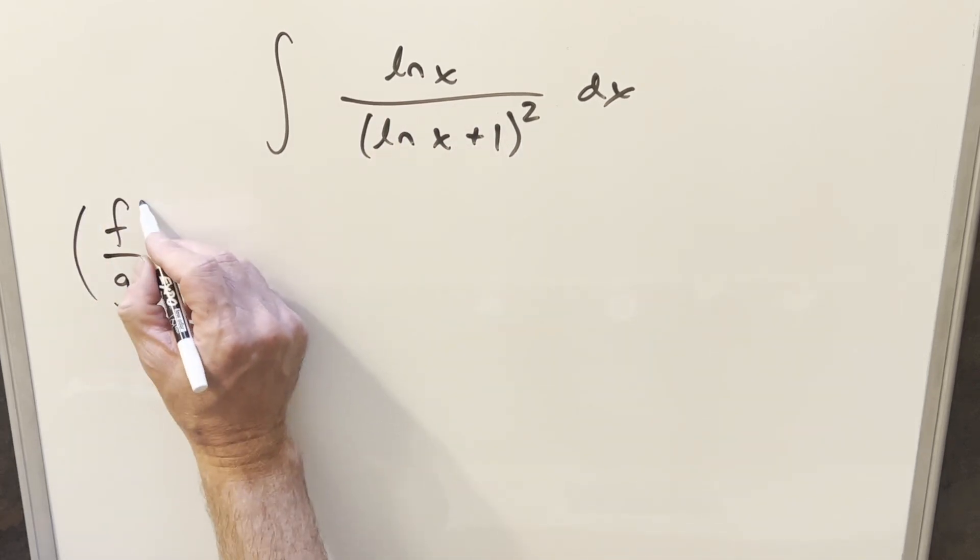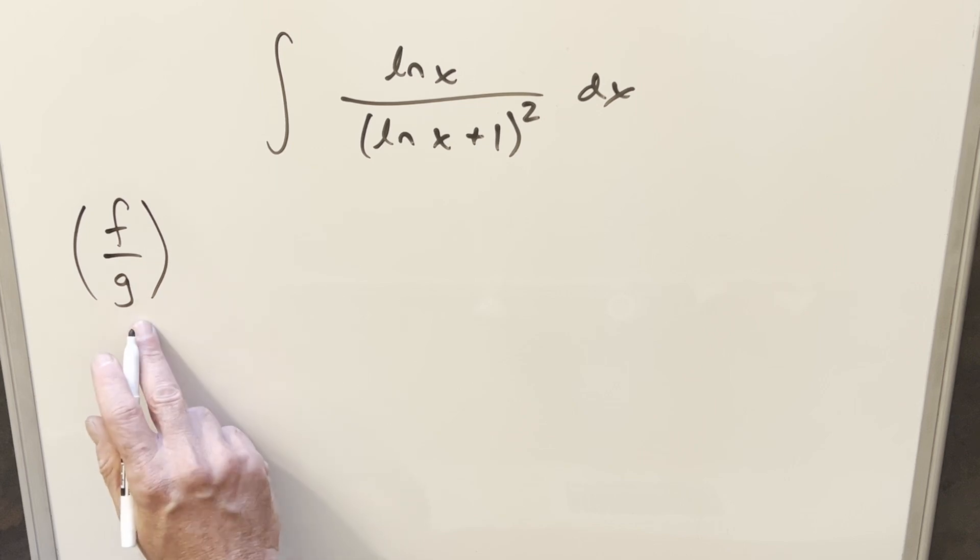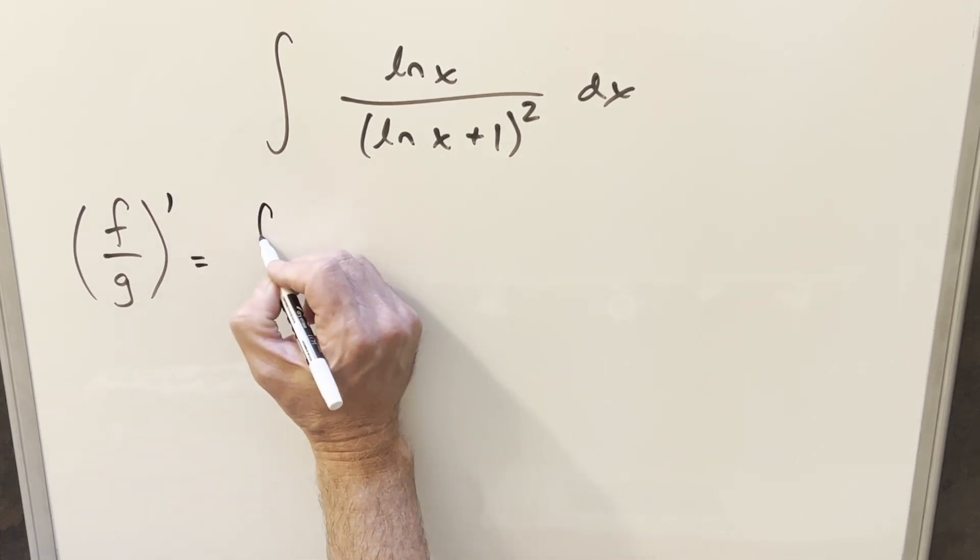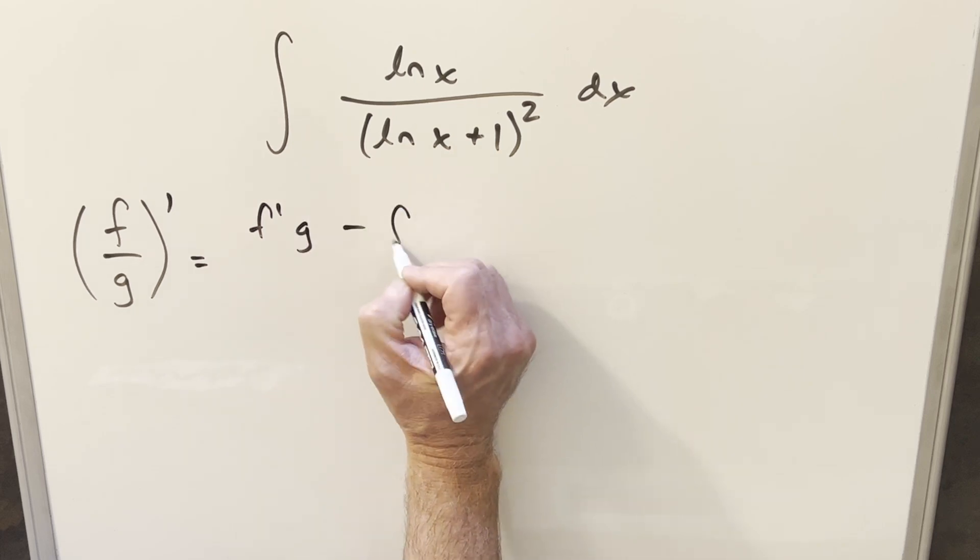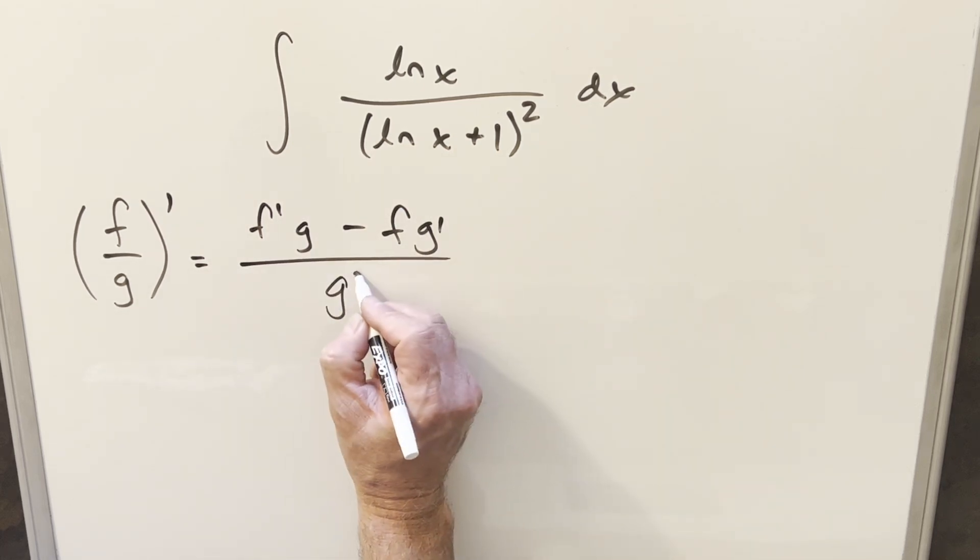Just recalling the quotient rule, if we have two functions in terms of x written as a fraction like f over g, the derivative of this is going to be f prime g minus f g prime over g squared.